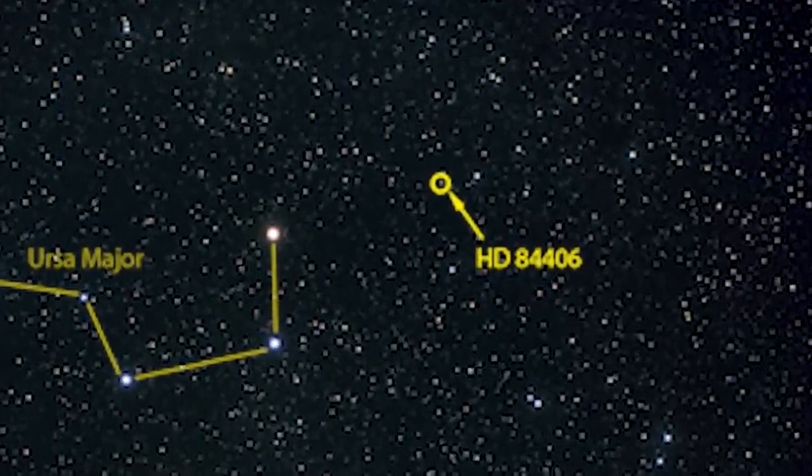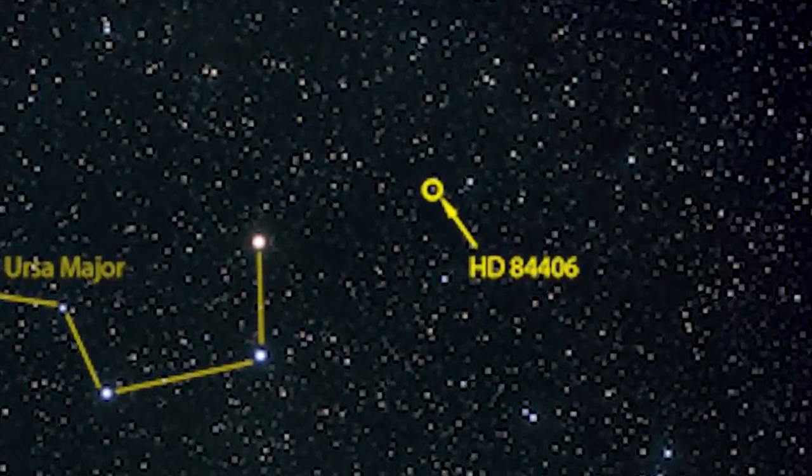We know that the primary mirror segments aren't aligned, so they actually act like 18 separate telescopes. And we expect to see 18 separate images, one for each mirror, that are a little bit blurry at this point because we haven't aligned or focused anything.